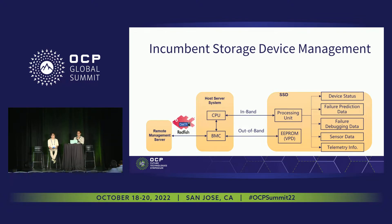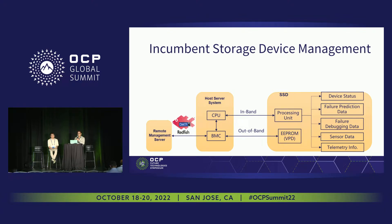This is one kind of management architecture especially for SSDs. There are two main paths: one is in-band and the other is out-of-band for management. Through the in-band path, inside the SSD we have a processing unit — a storage controller — that collects SSD data including device status, sensor data, and telemetry information. We also have an out-of-band path; inside the SSD we maintain some vital product data in EEPROM, and through the BMC and out-of-band path we can retrieve that vital product data from the SSD.